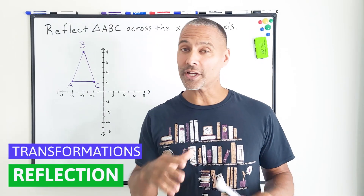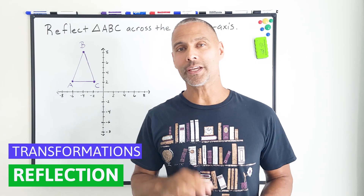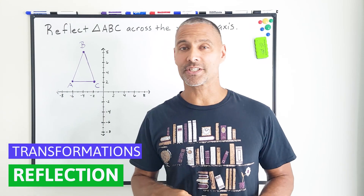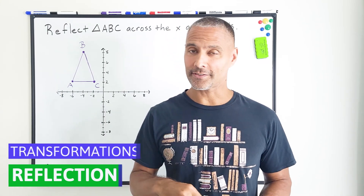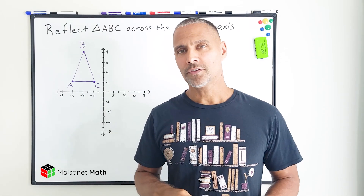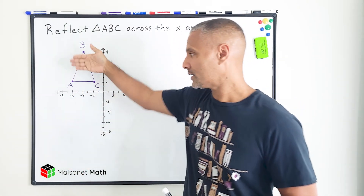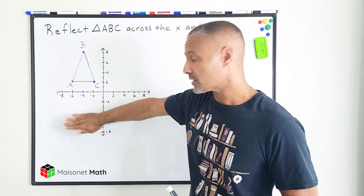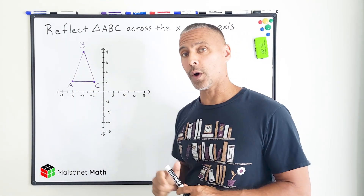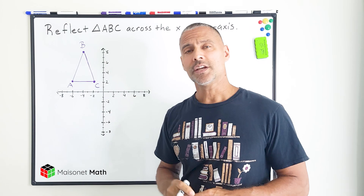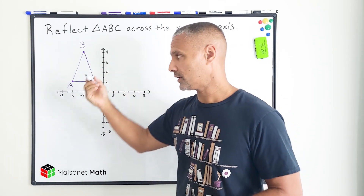Hey, this is Mr. Masonette, and what we're going to do in this math video is I'm going to show you a quick way that we can reflect an object on the coordinate plane, specifically across the x-axis as well as the y-axis. So we have triangle ABC that we're going to reflect in this direction across the x as well as this direction across the y. The first thing that I like to do is just write down the current position of each one of our vertices.